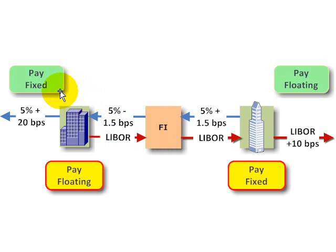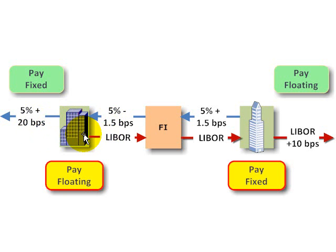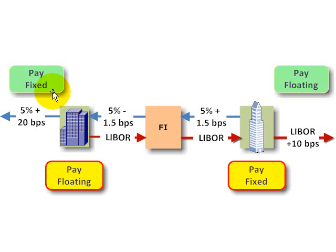If we go back to company A, before the swap they were paying fixed. Now in the swap, they are receiving the fixed rate, which almost entirely matches their obligation. The only difference is 20 plus 1.5, or 21.5 basis points. So company A's net position, since the fixed rate basically passes through, is they are going to be paying LIBOR plus 21.5 basis points.